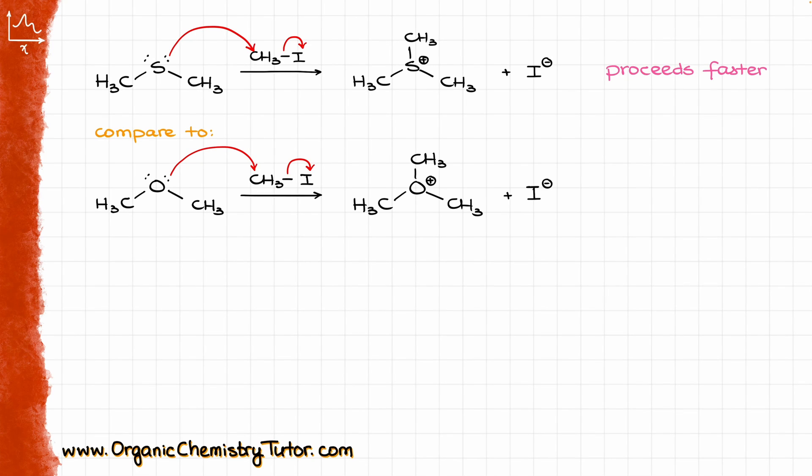If you open any sophomore organic chemistry textbook, you'll see an example similar to what I have on the screen. Typically, the textbook explanation will go into some details about the polarizability of the sulfur atom, or that sulfur with the positive charge is more stable than oxygen, or something about the electronegativity of the sulfur atom versus the oxygen, or any combination of those statements.